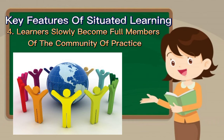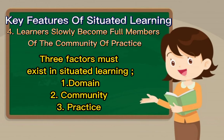Three factors must exist in situated learning. First, domain — defines the identity of the community, its place in the world, and its value to members and others. Second, community — refers to those who engage in joint activities and discussion, help each other, share information, learn together, and build relationships, resulting in a sense of belonging and mutual commitment. Third, practice — includes members of the community of practitioners and their shared repertoire of possible shared activities.